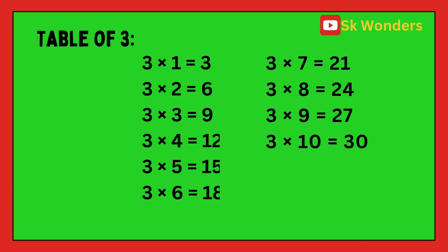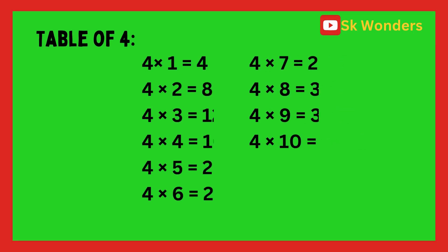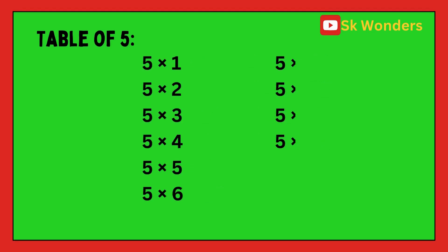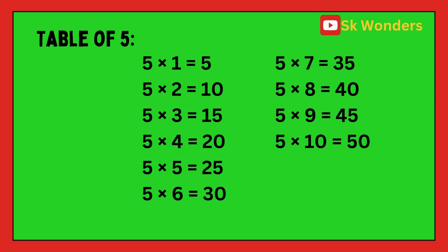Three times five is fifteen. Three times six is eighteen. Three times seven is twenty-one. Three times eight is twenty-four. Three times nine is twenty-seven. Three times ten is thirty. Table of four: four times one is four, four times two is eight, four times three is twelve, four times four is sixteen, four times five is twenty, four times six is twenty-four, four times seven is twenty-eight, four times eight is thirty-two, four times nine is thirty-six, four times ten is forty. Table of five: five times one is five, five times two is ten, five times three is fifteen, five times four is twenty, five times five is twenty-five, five times six is thirty, five times seven is thirty-five, five times eight is forty, five times nine is forty-five, five times ten is fifty.